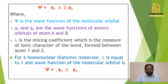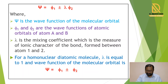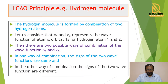Lambda is the mixing coefficient, and this mixing coefficient is the measure of the ionic character of the bond formed between atom 1 and atom 2. In the case of homonuclear diatomic molecules, both atoms are the same, so the lambda value equals 1, and the equation can be written as psi equals phi1 plus or minus phi2. For simplification, we use the hydrogen molecule formation to understand the LCAO principle.